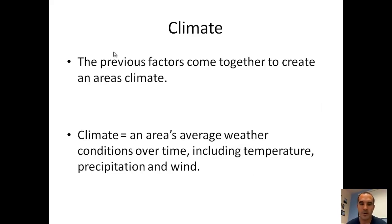All the previous factors come together to create an area's climate, and that's going to be the average weather conditions over time, including temperature, precipitation, and wind. The example wouldn't be walking outside on a Friday and feeling 80-degree weather and sun—climate would be the average year-round conditions. So over a whole year, what's your average weather? That would make up your climate.